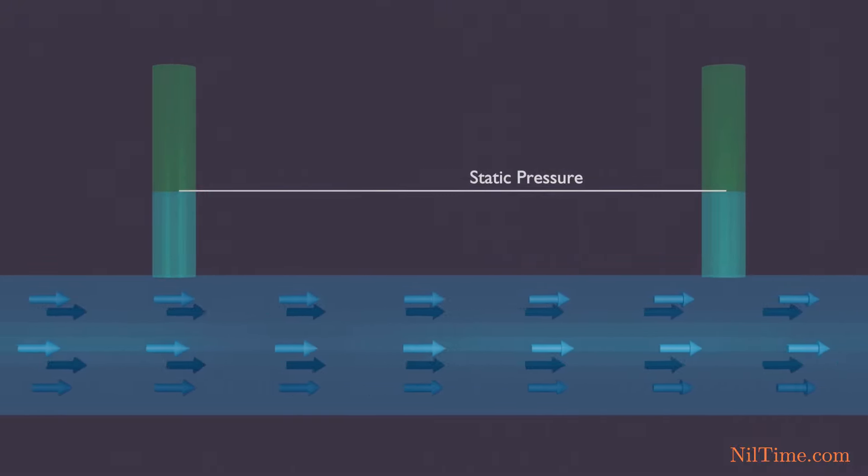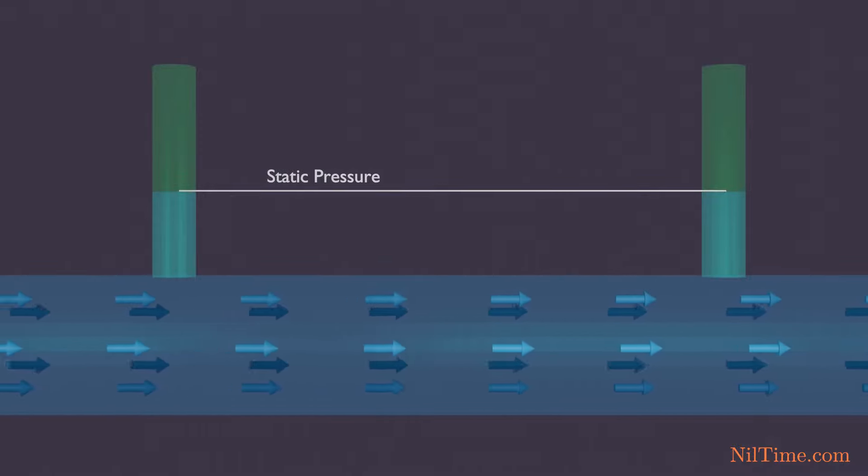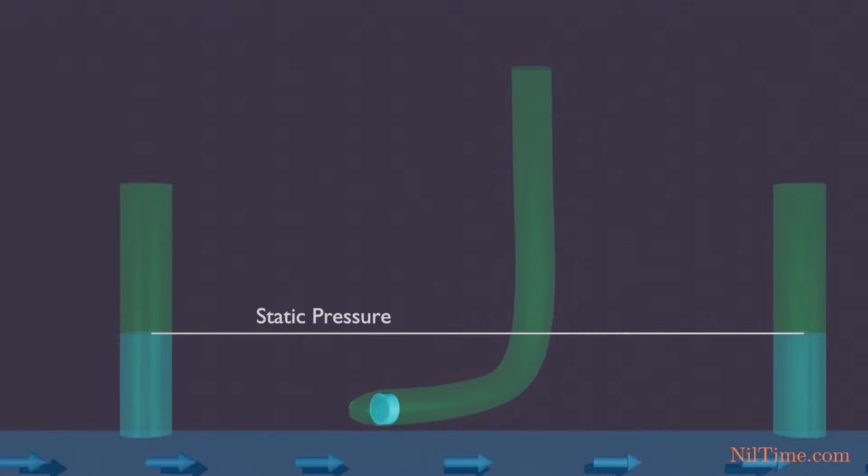The pressure height would be same, considering the flow is steady and incompressible. But what if we replace it with a PETA tube?